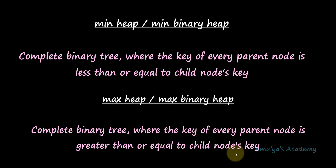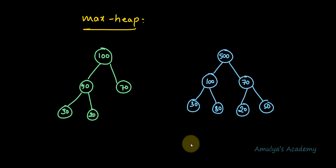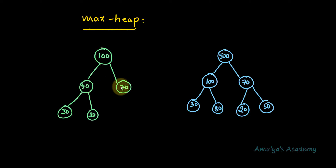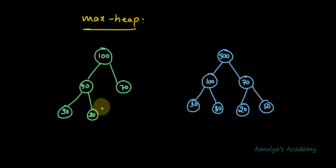Let me show you a few examples. First, let's start from the max binary heap. Here the key of the parent node should be greater than or equal to the child node. We can see the parent node and its child nodes — the parent's key is greater than its children. For example, 50 is the parent of 30 and 20. You can also see this is a complete binary tree, so this is a max binary heap. To check whether a tree is a binary heap, first check whether it is a complete binary tree, then check whether it satisfies the heap property.